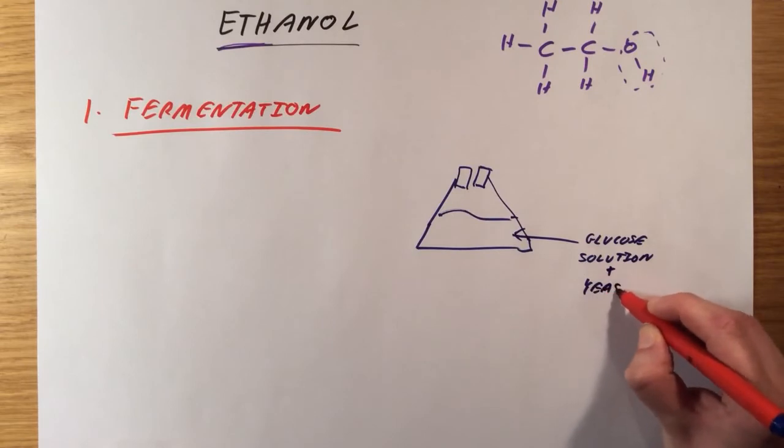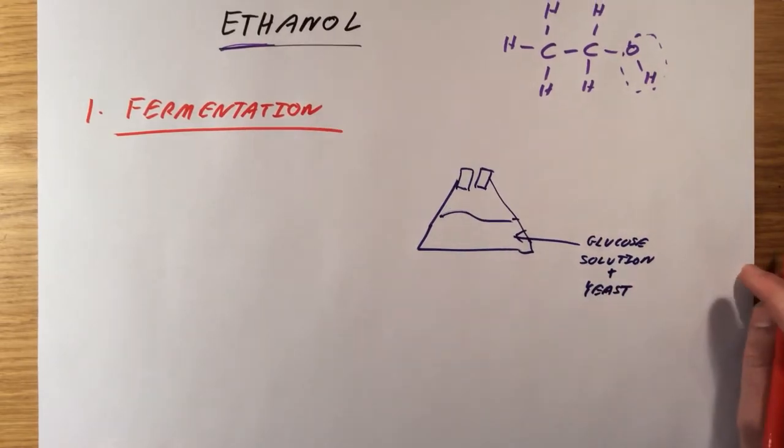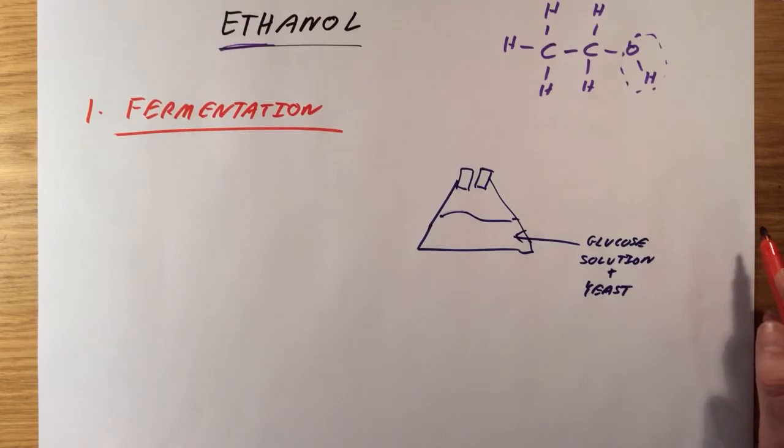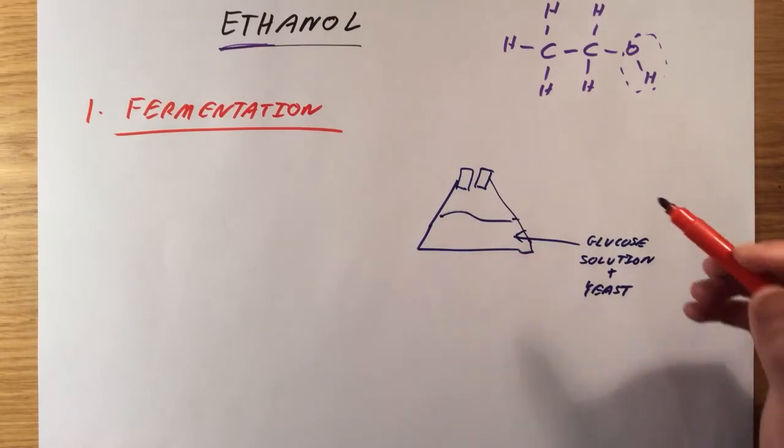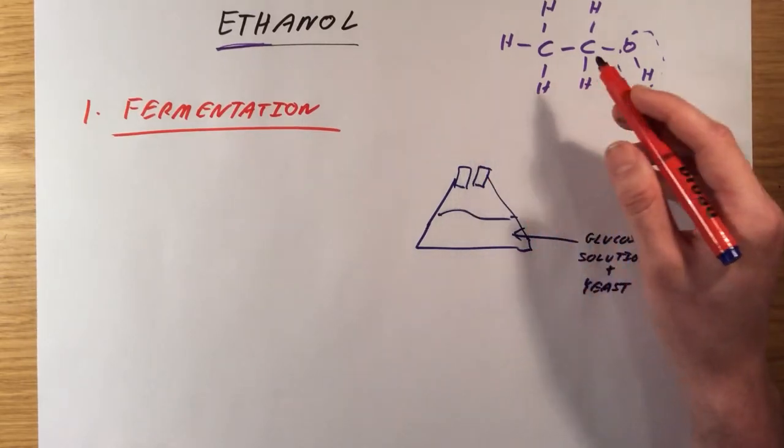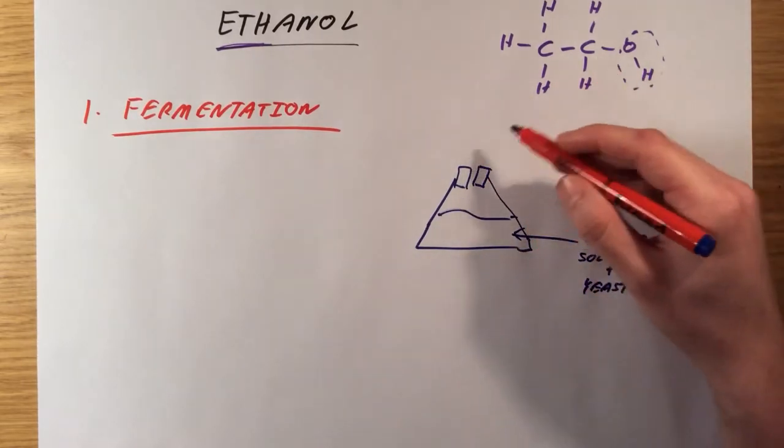And you also need yeast. Yeast is the catalyst for this process and as yeast respires, it will produce ethanol. So as the yeast breaks down the glucose solution, it is going to form ethanol and it will also give off carbon dioxide.